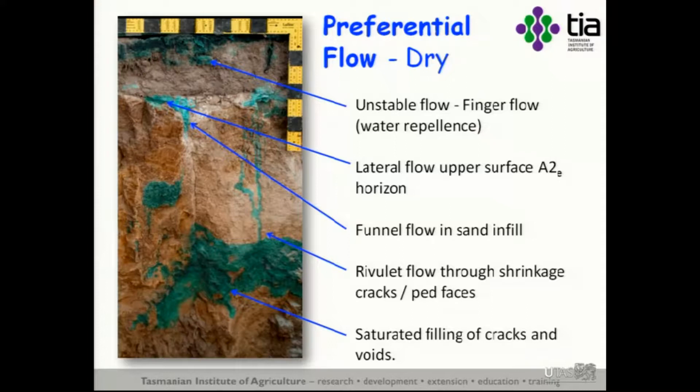So what are the processes? They're predominantly preferential flow, as you'd suspect. In the top of the A horizon, we get unstable flow or finger flow due to water repellents. We get lateral flow on top of and within the A2, then movement down the sand infills. Most interestingly, we get rivulet flow — little trickles running down the cracks between the clay columns, hitting the bottom and then actually backfilling back up the soil profile like filling a bathtub. These soils saturate from the bottom up, not the top down — the complete opposite of everything we understand about saturating soil.